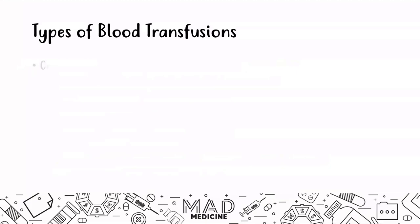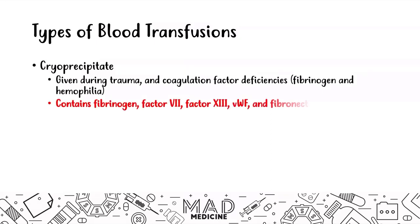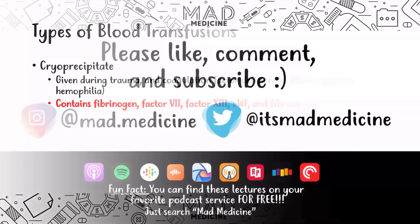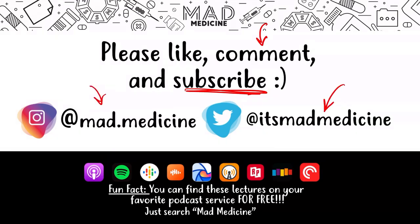Another type is cryoprecipitate, which is given during trauma and coagulation factor deficiencies like low fibrinogen and hemophilias. Cryoprecipitate contains fibrinogen, factor 8, factor 13, von Willebrand factor (VWF), and fibronectin. That covers everything you need to know about the types of blood transfusions for Step 1. Don't forget to like, comment, and subscribe. Leave a comment below with any questions, and you can also listen to these lectures on your favorite podcast service for free — just search Mad Medicine.